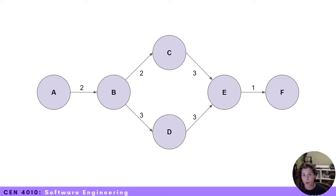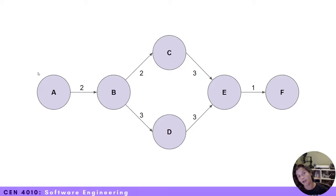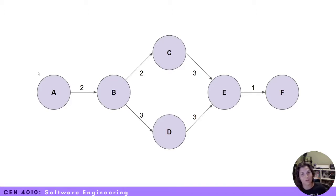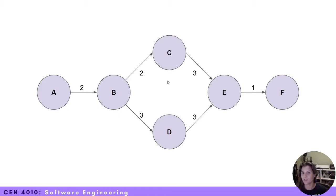Hi everybody. In this video I want to review how to calculate the earliest start time, the latest start time, and the slack time based off of an activity graph with durations. This is the activity graph that we will be looking at. Activity graphs are actually directed graphs, which is where your data structures and algorithms has a role to play and why it was a prerequisite for this class. We have an example of a short directed acyclic graph, and we're going to use this to calculate our earliest start time, latest start time, and overall slack. So let's get started.